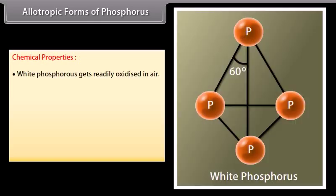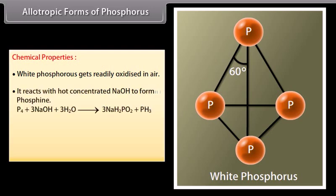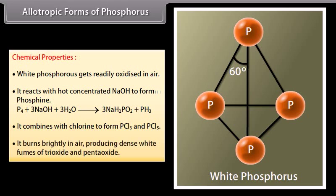White phosphorus gets readily oxidized in air. It reacts with hot concentrated NaOH to form phosphine. It combines with chlorine to form PCl3 and PCl5, and burns brightly in air producing dense white fumes of trioxide and pentoxide.